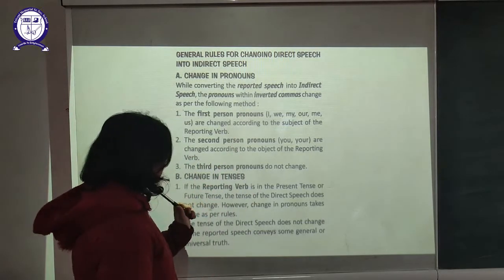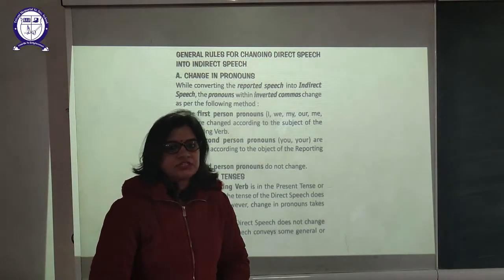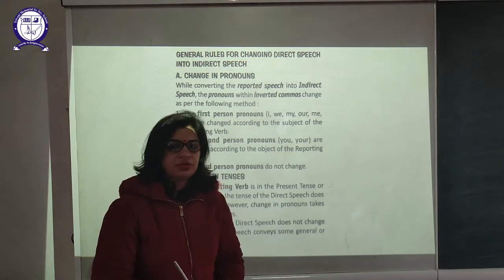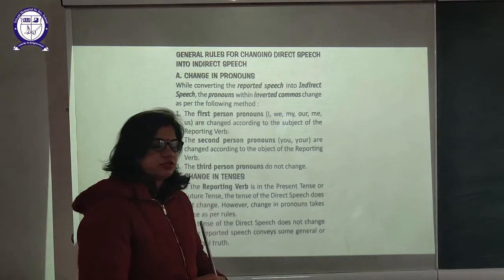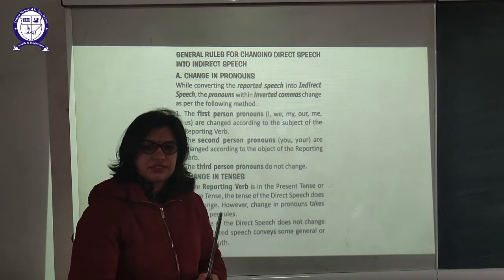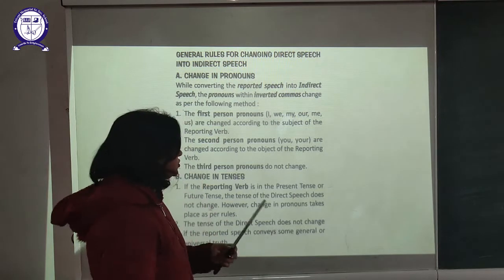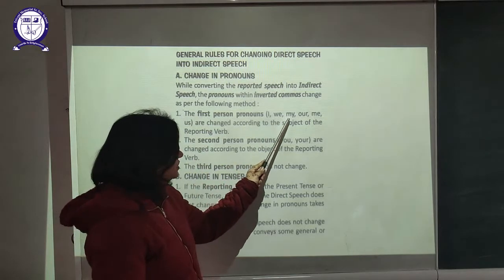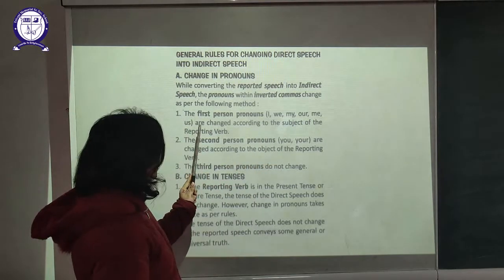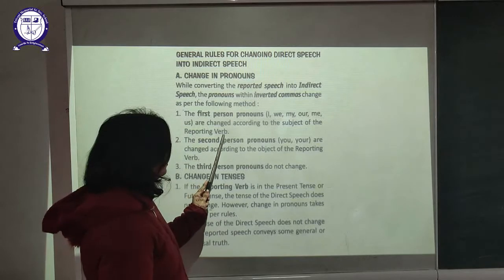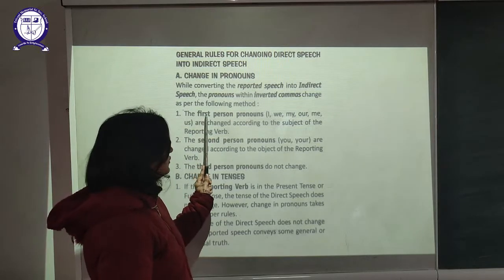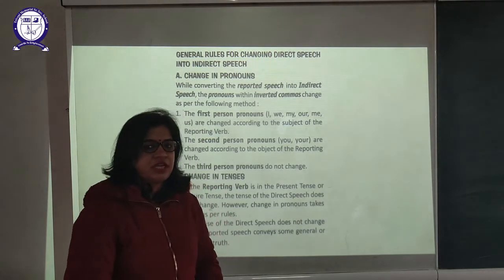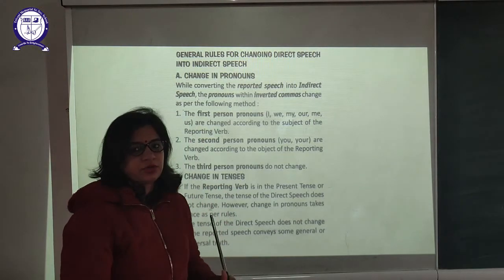By converting the reported speech into the indirect speech, the pronouns within the inverted commas change as per the following method. In pronouns we have three persons — first person, second person, and third person — and according to these we make the changes. If the first person pronouns — I, we, me, our, us — are in the reported speech, they are changed according to the subject of the reporting verb. If the subject of the reported speech is the second person, then it will be changed according to the object of the reporting verb.